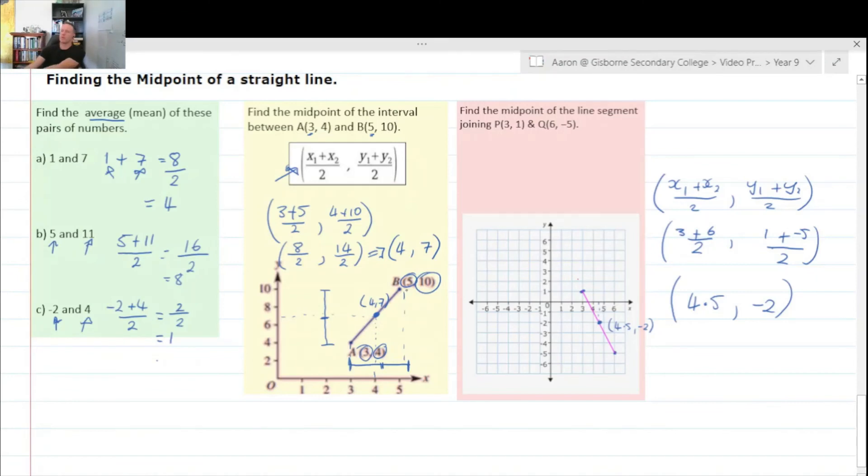So that's how you find the midpoint of a straight line, using this equation up here. So average out your two x points, so 3 and 5 for that one. Average out your two y points, 4 and 10, and that will give your new midpoint of your straight line.